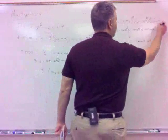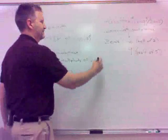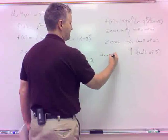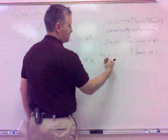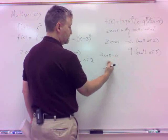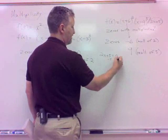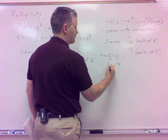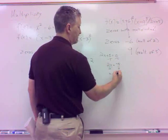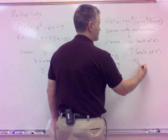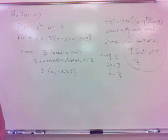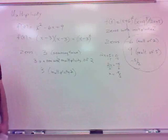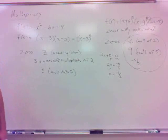For the factor 2x plus 5, set it to zero: subtract 5, divide by 2, giving x equals negative five-halves. So negative five-halves is also a zero. It occurs only once, so its multiplicity is 1 — though usually we don't write multiplicity when it's just one occurrence.